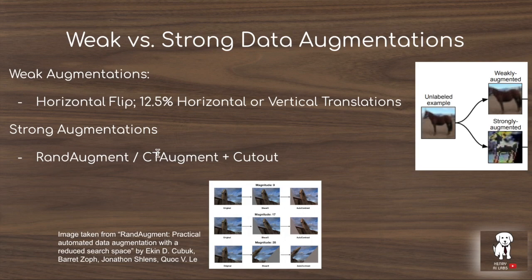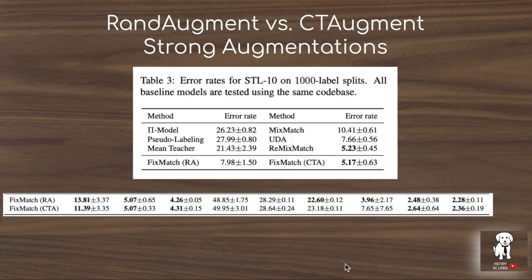These charts from the paper compare using RAND augment versus CT augment for the strong augmentations. You can see that in the case of the STL-10 dataset, the CT augment algorithm produces a much lower error rate than RAND augment, but across the CIFAR-10 and Street View House Numbers datasets the differences aren't that large.